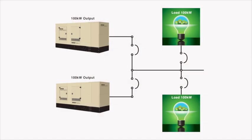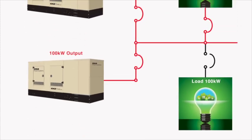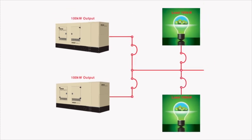For one, when two smaller sets are used instead of one large set to manage a large intermittent load, one set is run in parallel as load varies. Lightly loaded engines are susceptible to wet stacking.